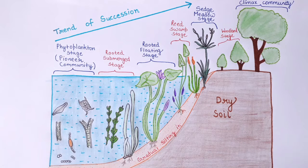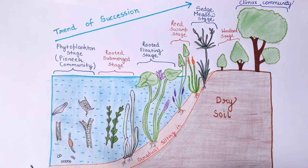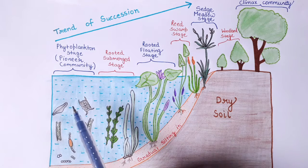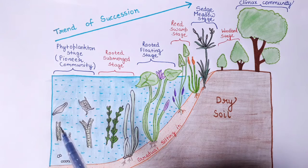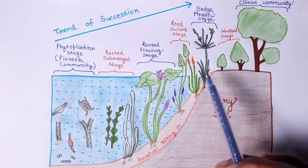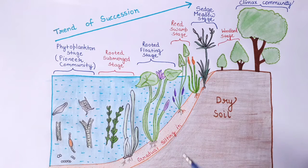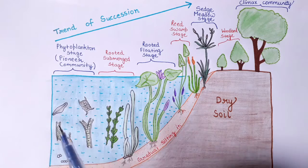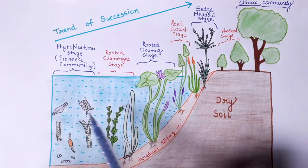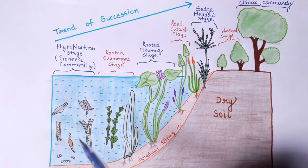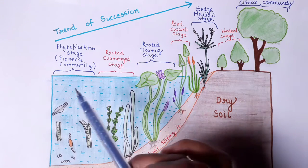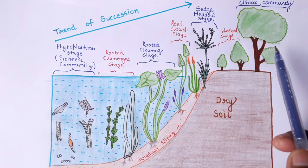Succession is a process that involves steady and gradual change in the species of a given area with respect to changing environmental conditions. Looking at this diagram, this is an example of hydrosere — succession taking place in a pond. You can see there is gradual change within species as environmental conditions change. At the beginning there are phytoplanktons in the pond, and ultimately the pond is converted into a forest after a long period of time.